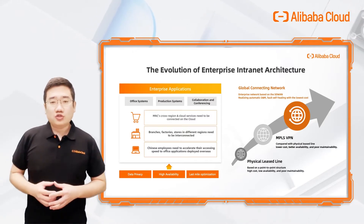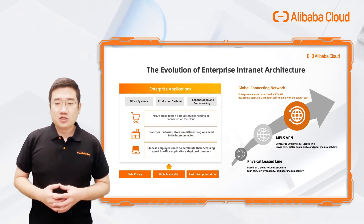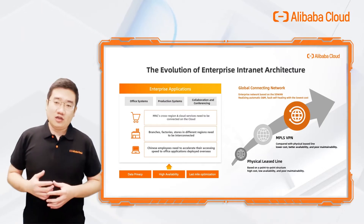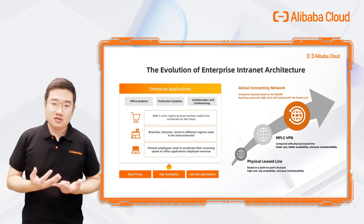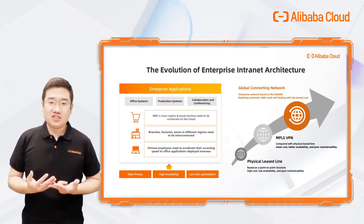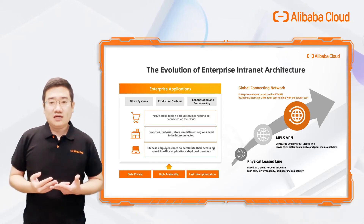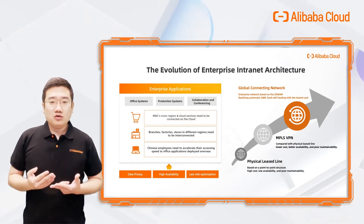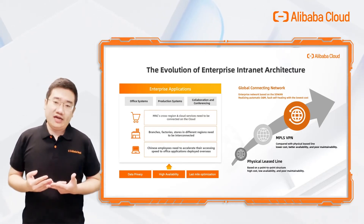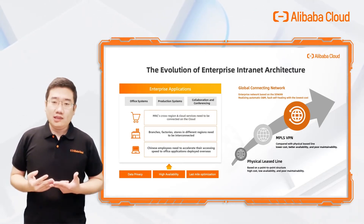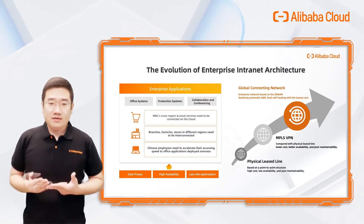So in traditional network architecture, maybe you'll need a physical LAN, or MPLS, or VPN over the internet to build the whole network. But you're going to have some challenges about higher cost, lower availability, and poor QoS.